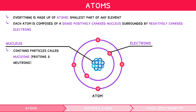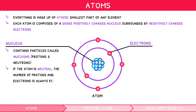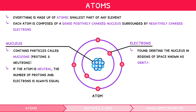Remember, if the atom is neutral, the number of protons and electrons is always equal. The electrons are found orbiting the nucleus in regions of space known as orbitals. These orbitals are arranged into a hierarchy known as energy levels.